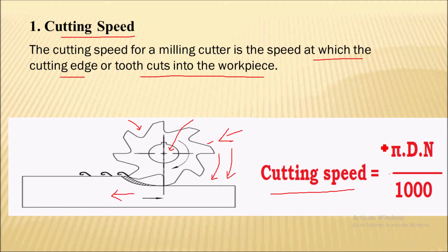This cutting speed is given by expression π·D·N divided by 1000, where D is the diameter of this milling cutter and N is the RPM of this cutter. This cutting speed is expressed in meter per minute.